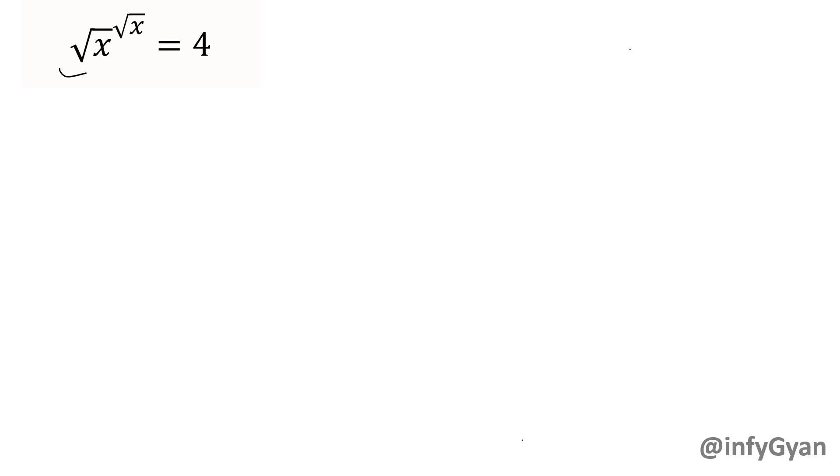If you observe the left side is having square root so x is positive always. So that value is 4. Let me consider √x = y. So if √x = y then this equation will convert into y^y = 4 and I can write this 4 as 2².